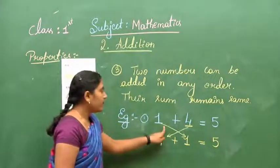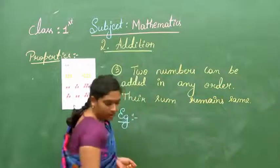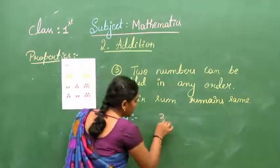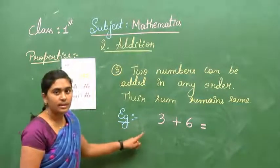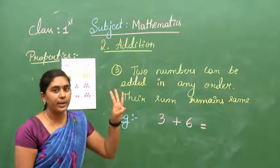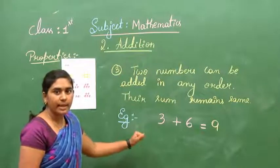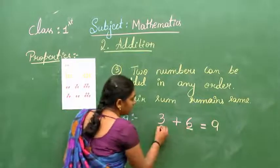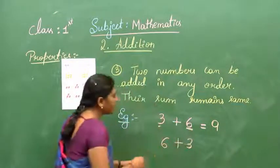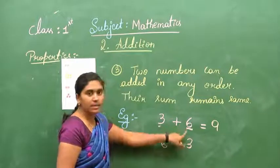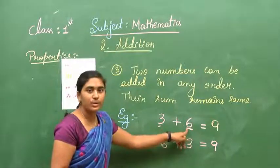The third property says: if you change the numbers' places, the answer will be the same. One more example: 3 plus 6 — the answer is 9. Now I will interchange the places of 6 and 3: 6 plus 3 — the answer is also 9. So if you change the place, the answer remains the same. These are the 3 properties we need to remember.